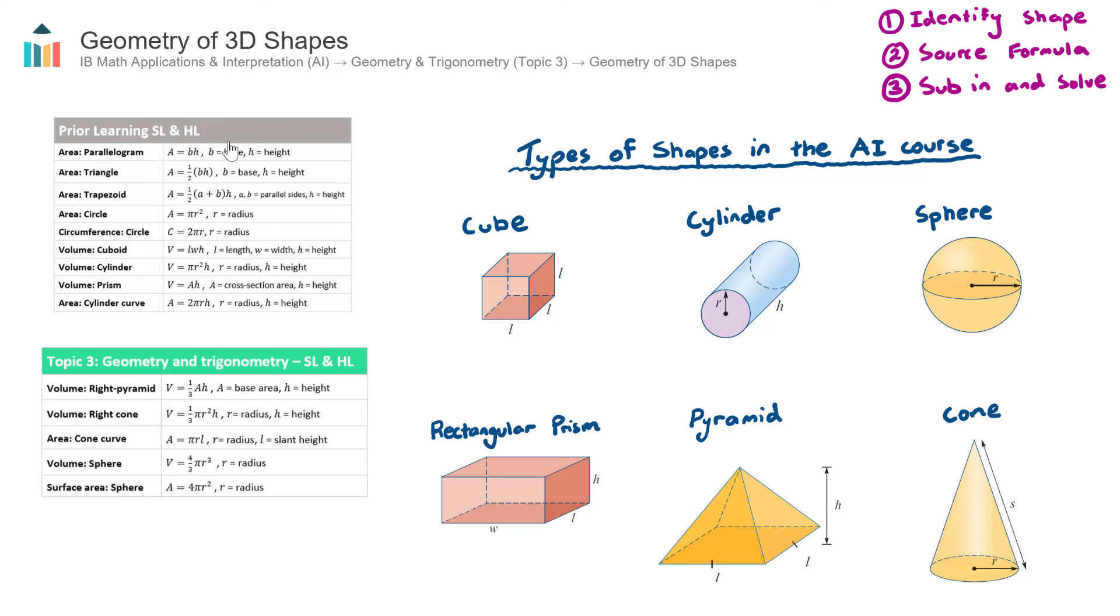The first section is in prior learning. Now these are more of the simple formulas that you would have encountered in your prior years of mathematics, simple area and volume formulas. And then we also have more advanced geometry formulas over in the topic 3 section, geometry and trigonometry, such as volume of pyramids, volume of spheres, etc.